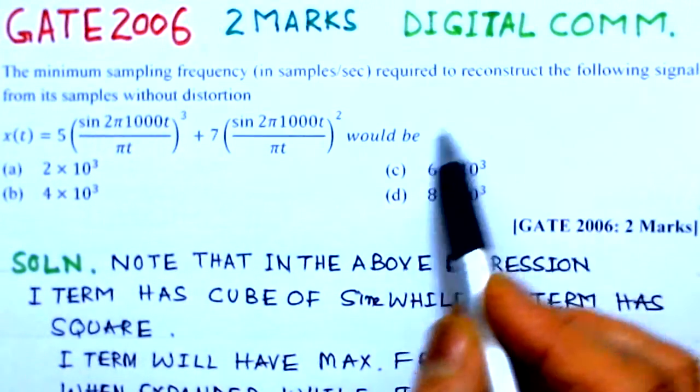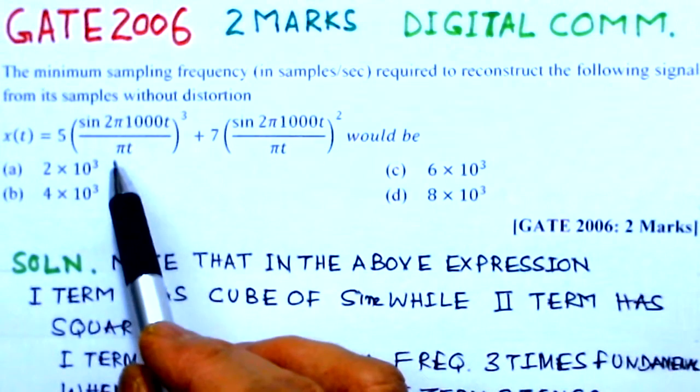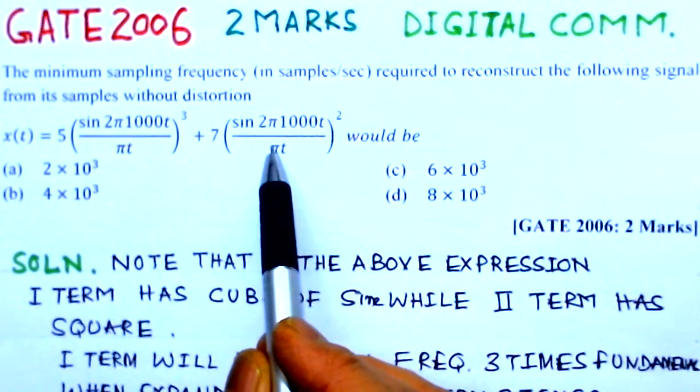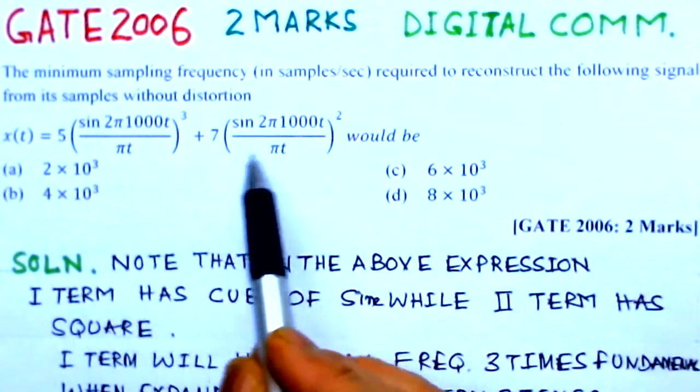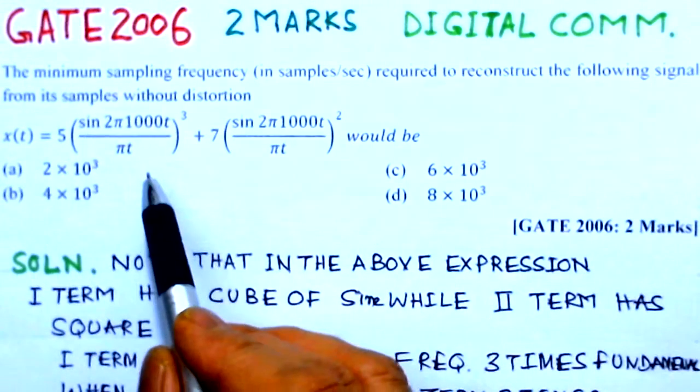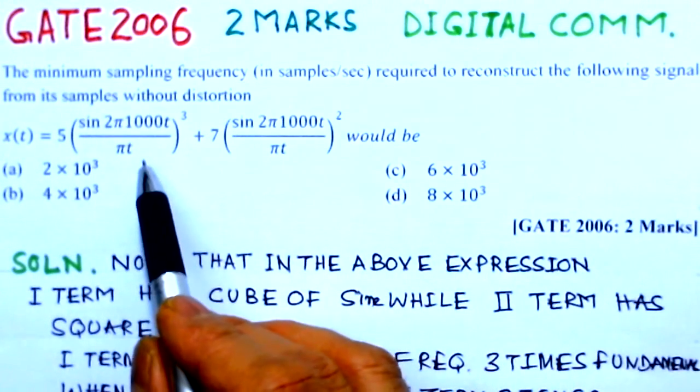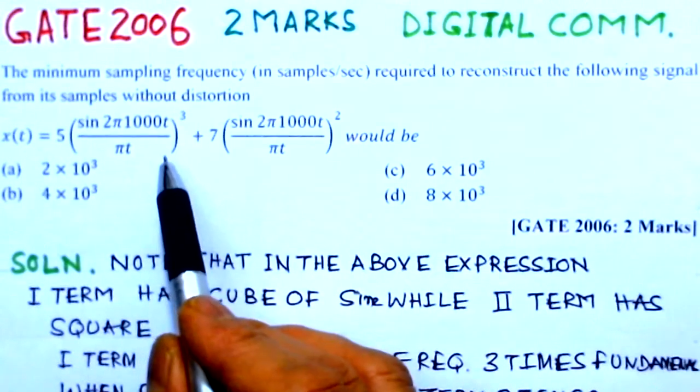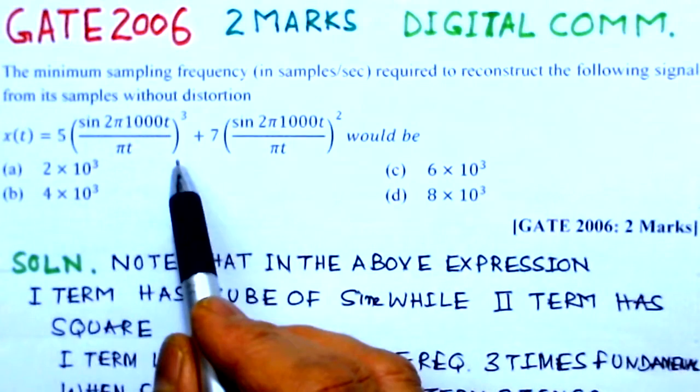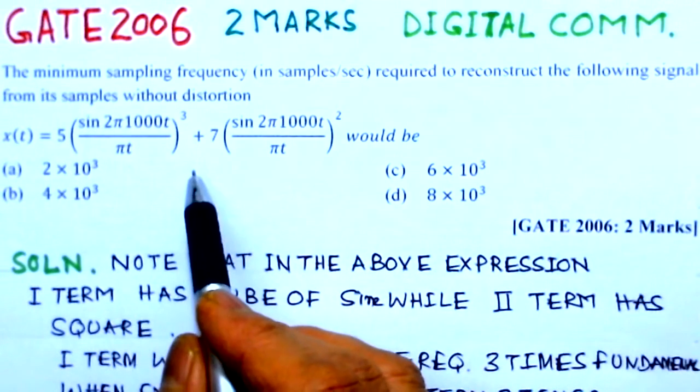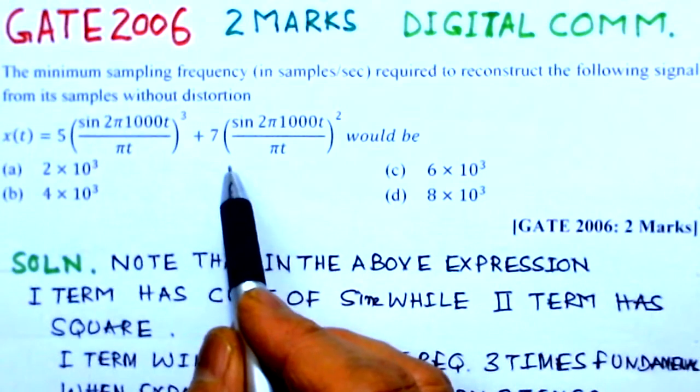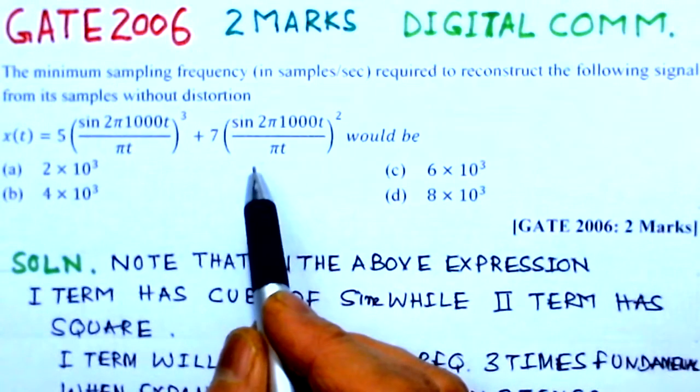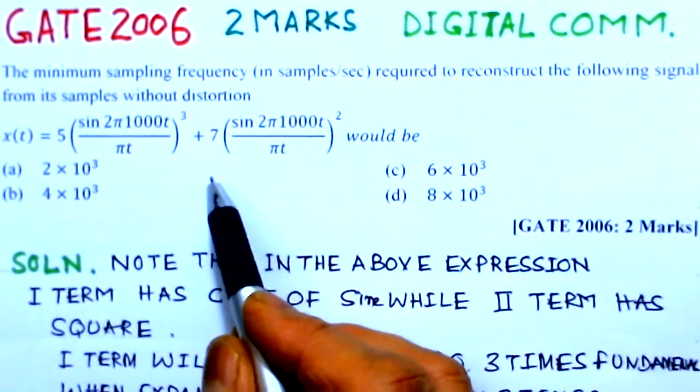So we should be able to first find what are the frequency components in this expression, in the signal. And then we have to take which is the highest frequency component, and depending upon that we will be able to find out what is the maximum frequency of the signal. And from maximum frequency you can determine the Nyquist frequency.